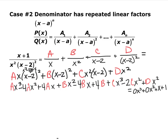Foiling everything out gives: ax cubed minus 4ax squared plus 4ax, plus bx squared minus 4bx plus 4b, plus cx cubed minus 2cx squared plus dx squared. That's the expanded numerator. We know the actual numerator is x plus 1, so I write the right side with placeholder zeros: 0x cubed plus 0x squared plus x plus 1.